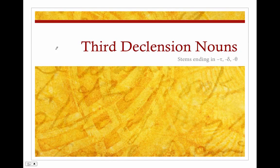Let's continue looking at third declension nouns, and what we're going to do is basically an extension of what we did in the last lesson. That is, we're looking at nouns whose stems end in tau, delta, or theta.